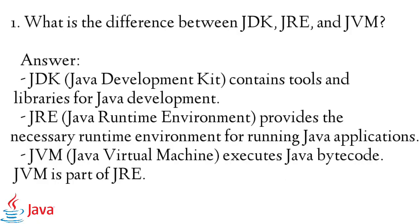Question 1: What is the difference between JDK, JRE, and JVM? Answer: JDK, Java Development Kit, contains tools and libraries for Java development. JRE, Java Runtime Environment, provides the necessary runtime environment for running Java applications. JVM, Java Virtual Machine, executes Java bytecode. JVM is part of JRE.